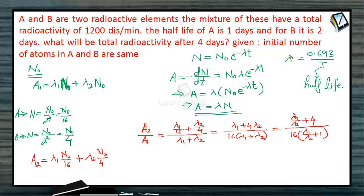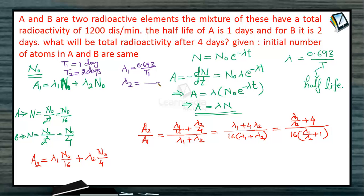We know that λ = 0.693 / half-life. So λ₁ is for A with T₁ = 1 day, and λ₂ is for B with T₂ = 2 days. Dividing λ₁ by λ₂, the 0.693 cancels, giving λ₁/λ₂ = T₂/T₁. Since T₂/T₁ = 2/1 = 2, we have λ₁/λ₂ = 2.